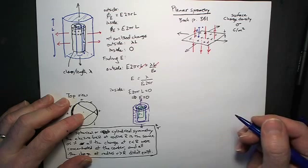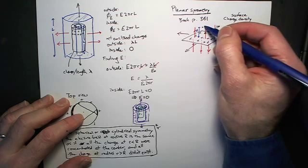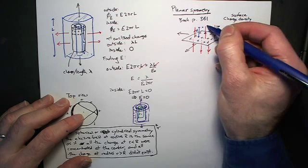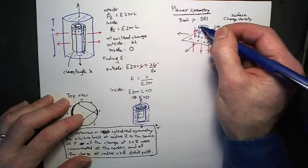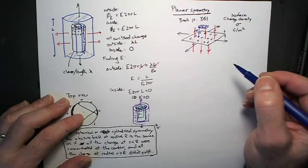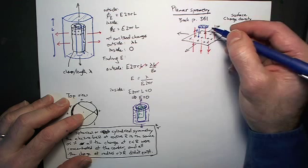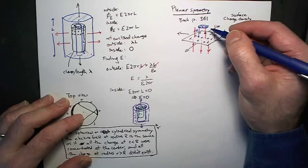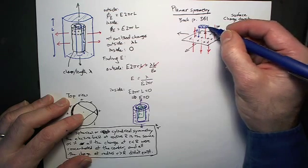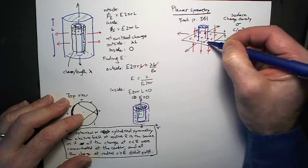So I want my Gaussian surface to include that point as part of the Gaussian surface. So I will choose a cylinder, and I'm going to have the point of interest be on the end cap of the cylinder. This is a situation where there are a couple of, two different good choices of the cylinder that you could choose.